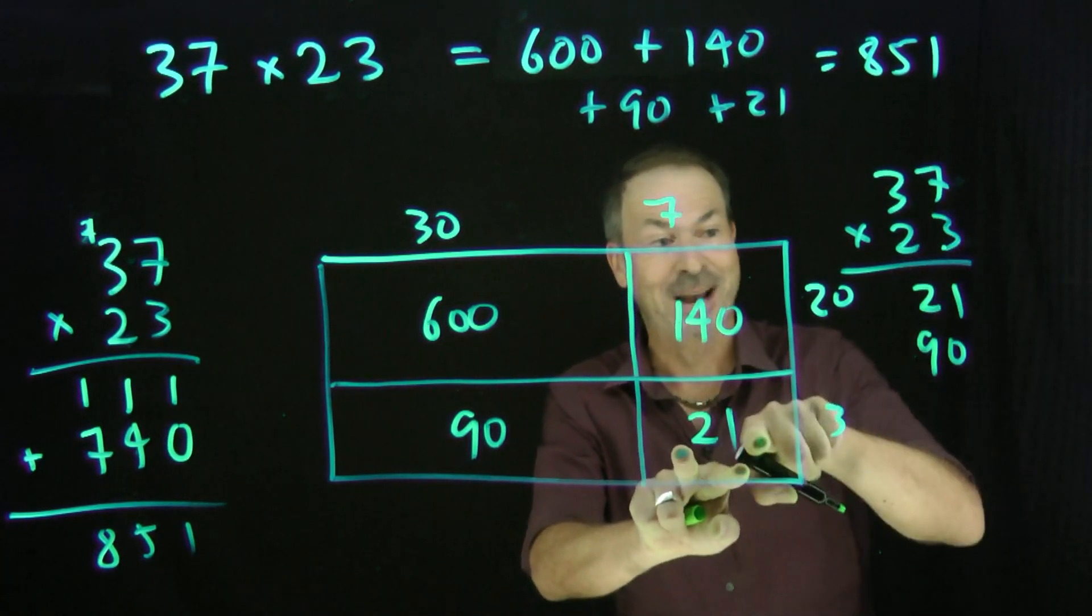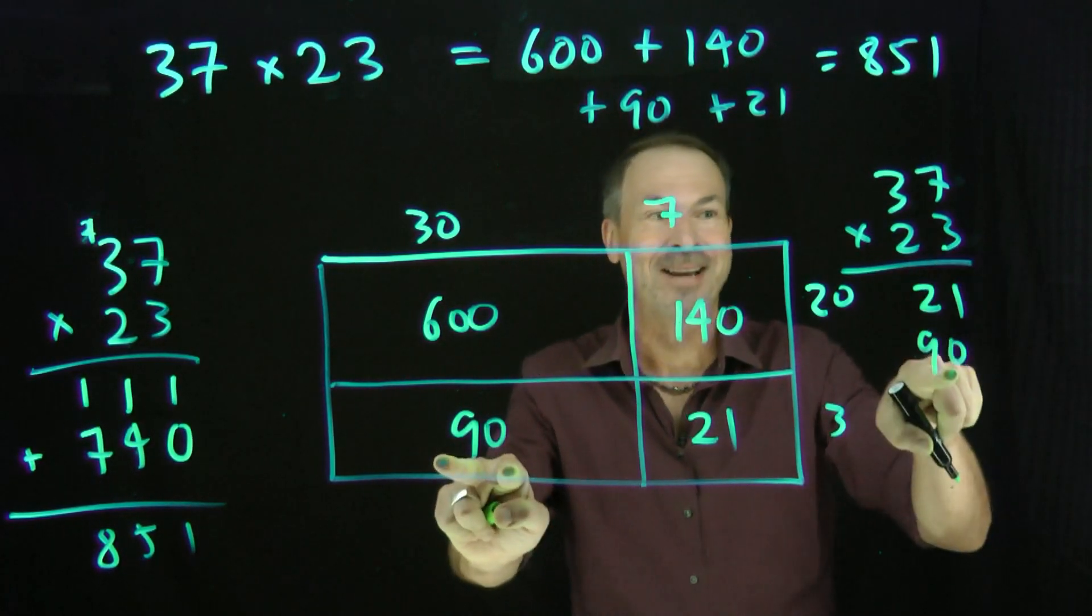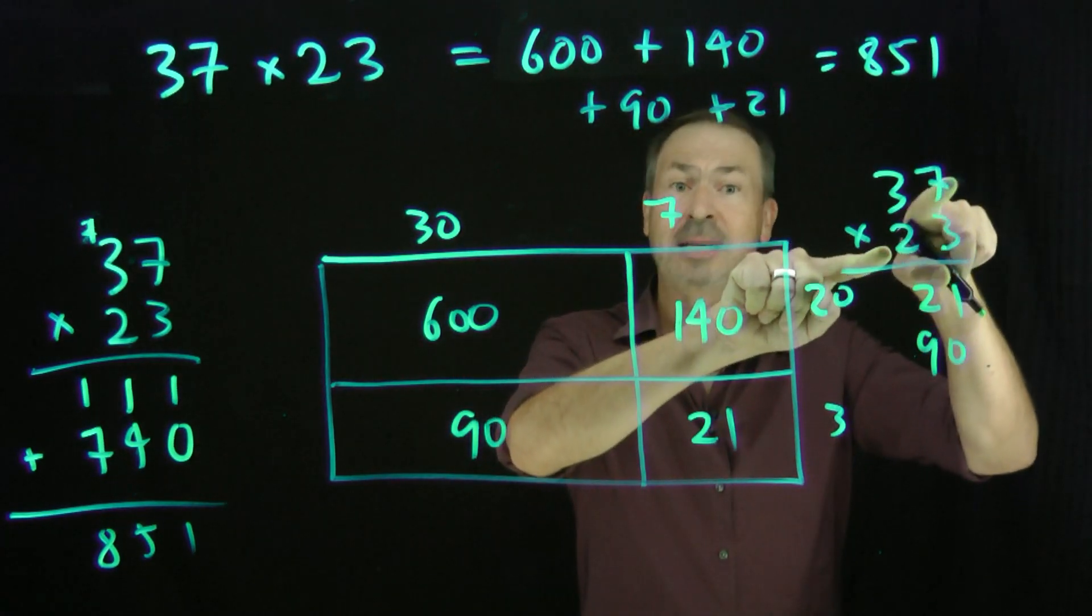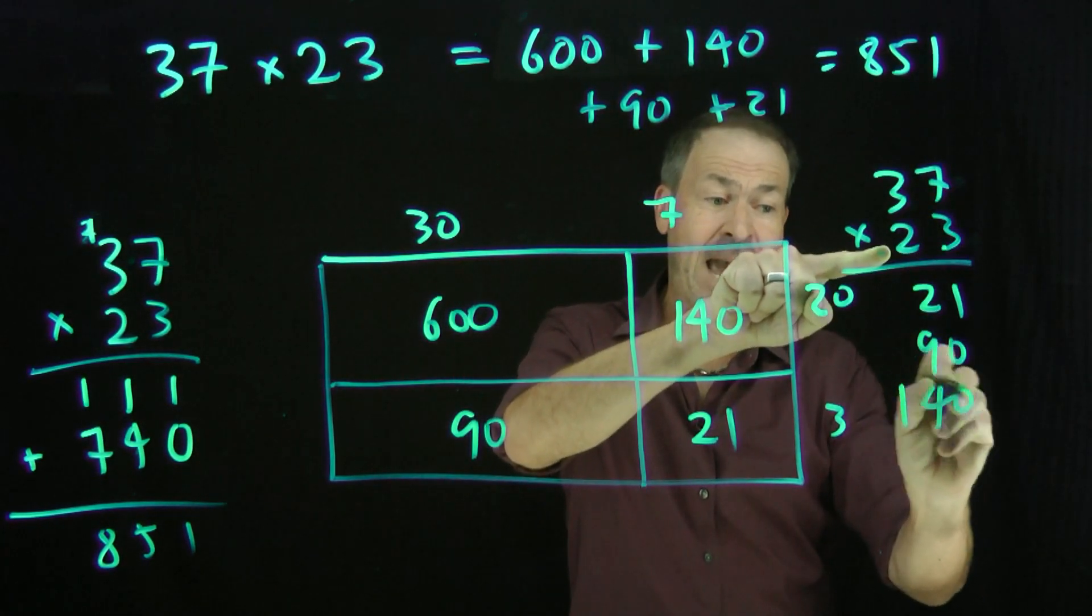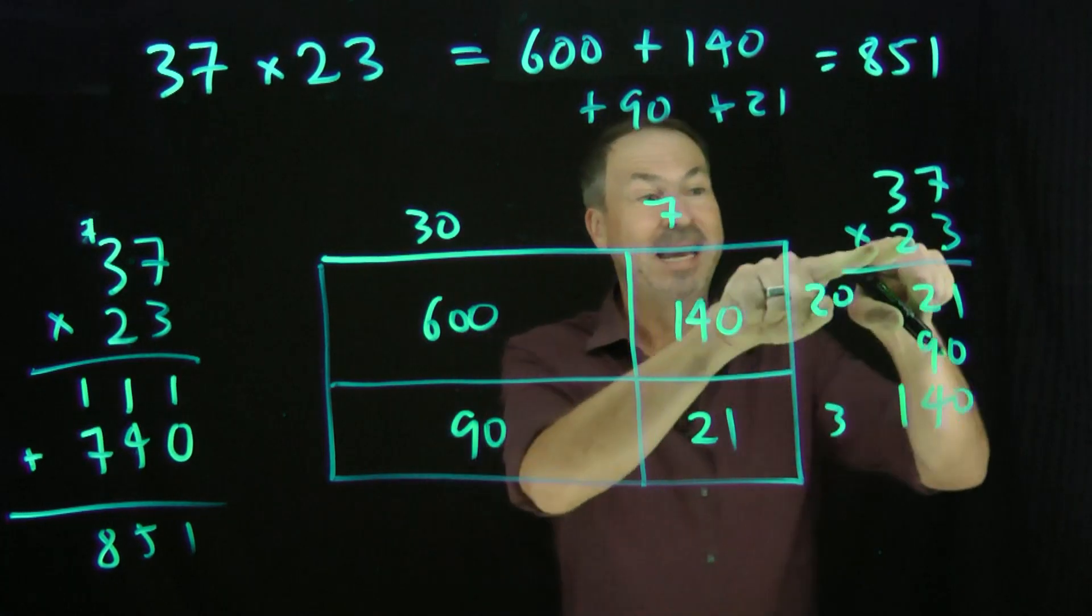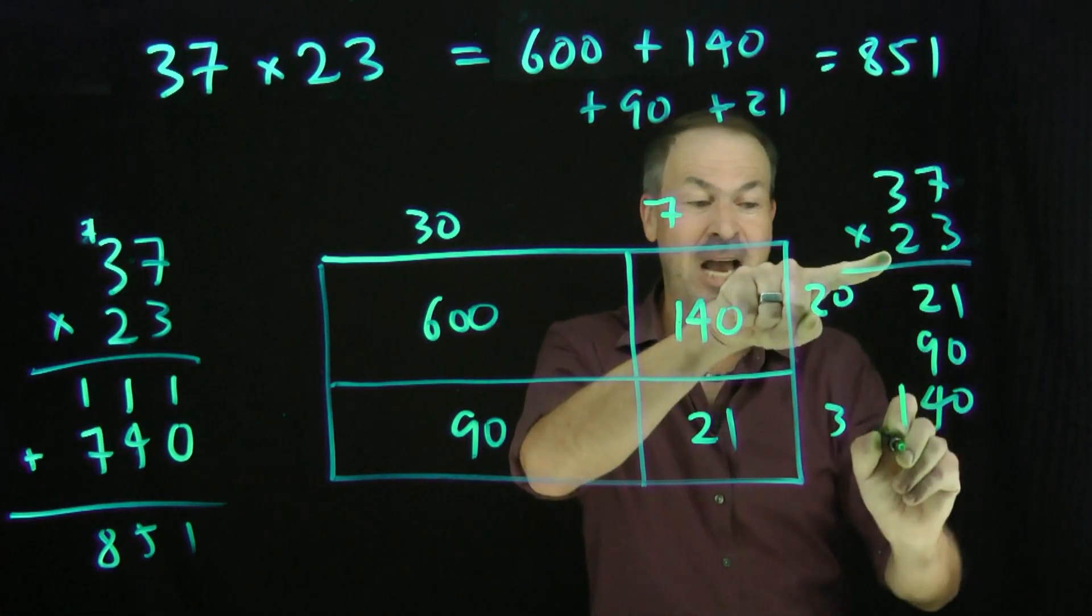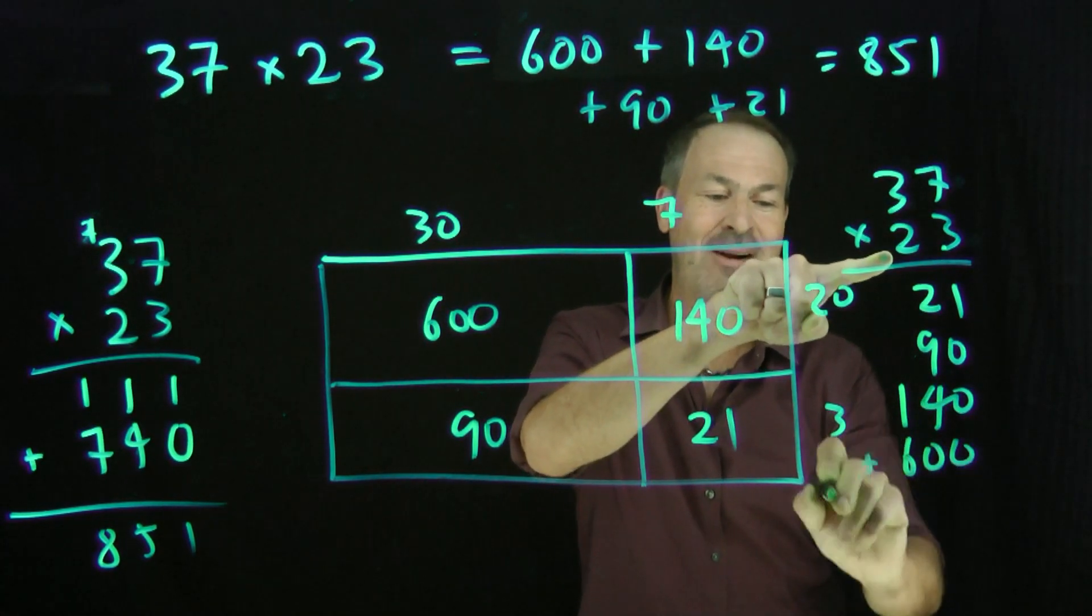I really did 3 times 7. There it is. I really did 3 times 30. There it is. Now do 20 times 7. 140. Actually write 140. Did it. And now do 20 times 30. 600. Actually write 600. And now add up those pieces.